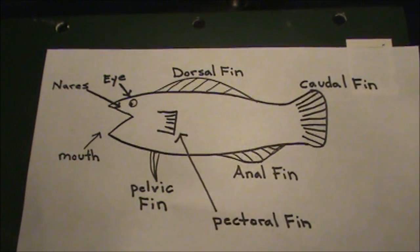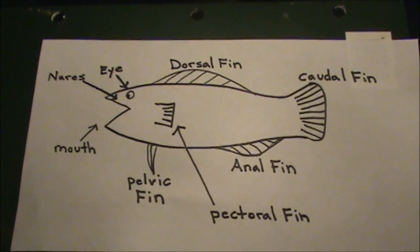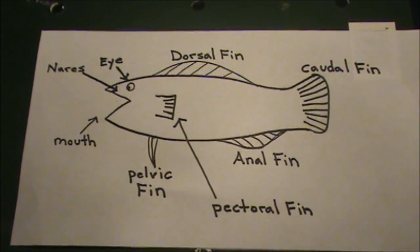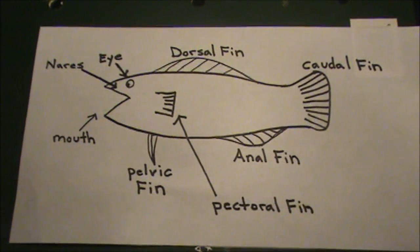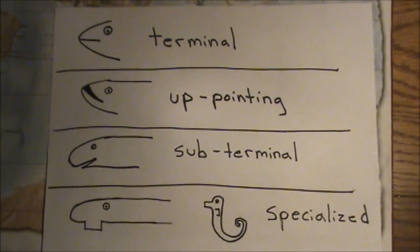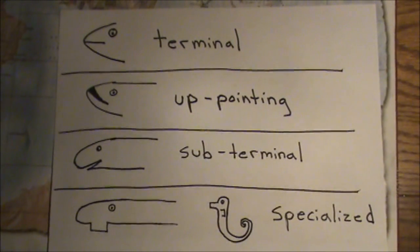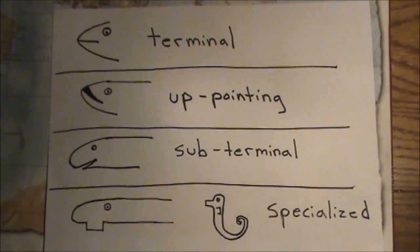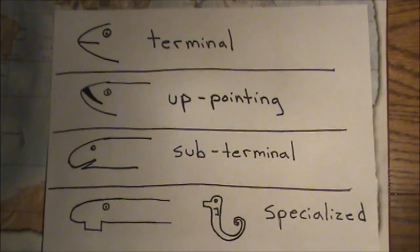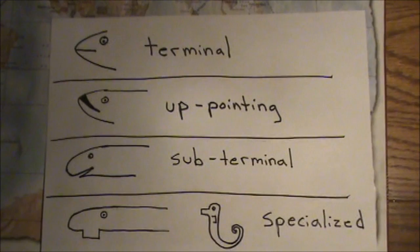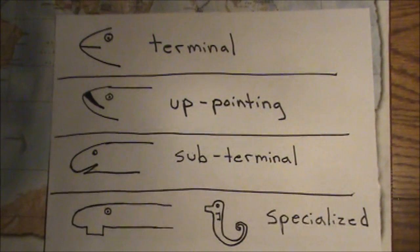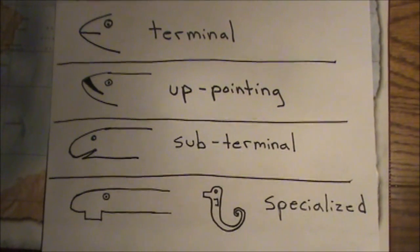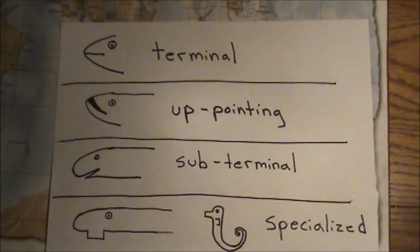So that's the external anatomy and the fins. Before I go to the organs, I just wanted to explain the different types of mouths that fish can have, because this can determine the type of fish they are, and you can learn a lot just from the type of mouth.